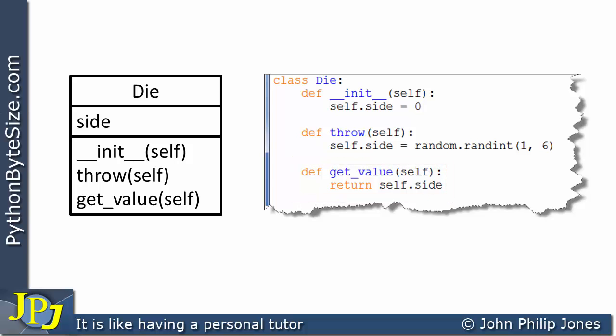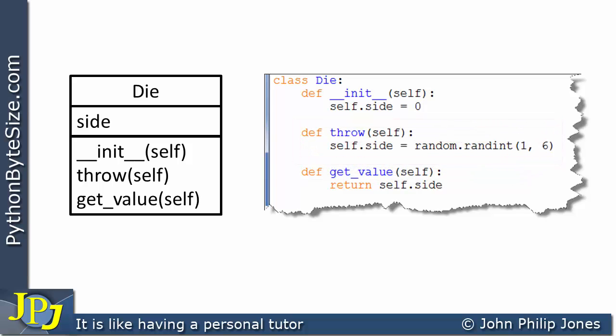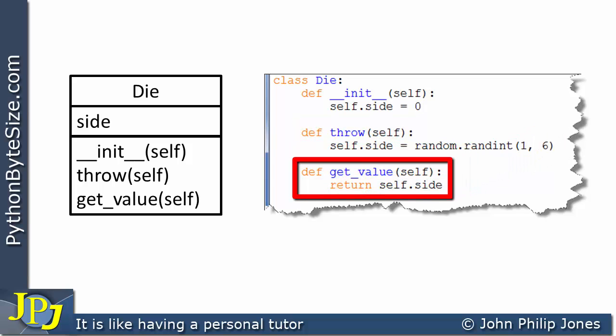I could have altered this class — I could have got rid of 'get_value' and put the return inside the 'throw' method. But I'm choosing to do it this way because it mirrors what you actually do when you throw a die: you throw it, it stops, then you have a look at its value. When you write object-oriented programs, it's often the case that you try to mirror what you've got in reality.